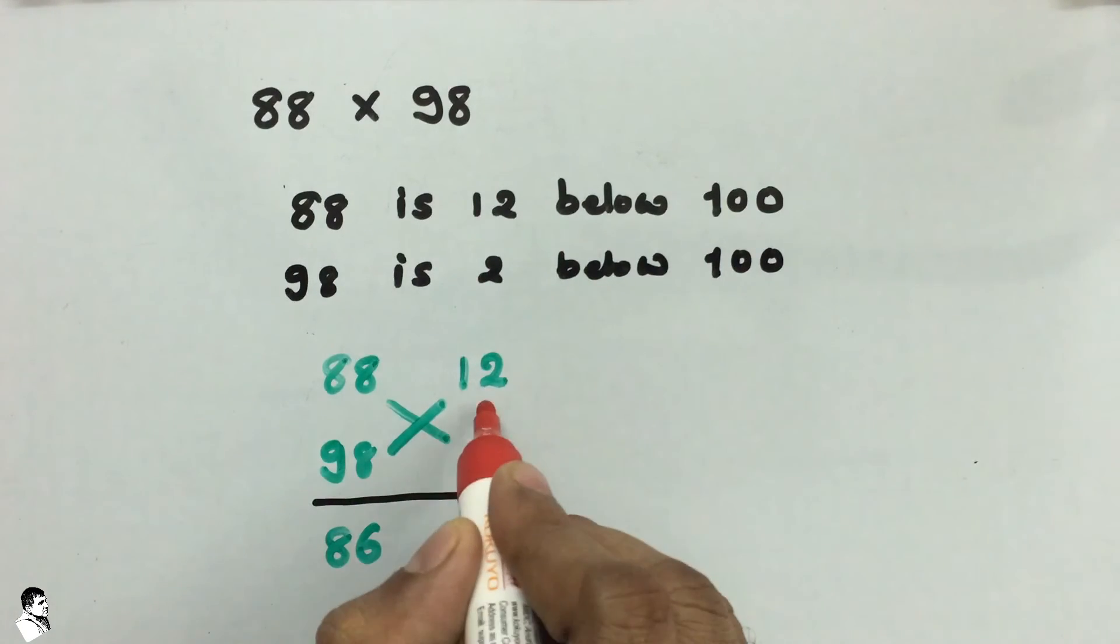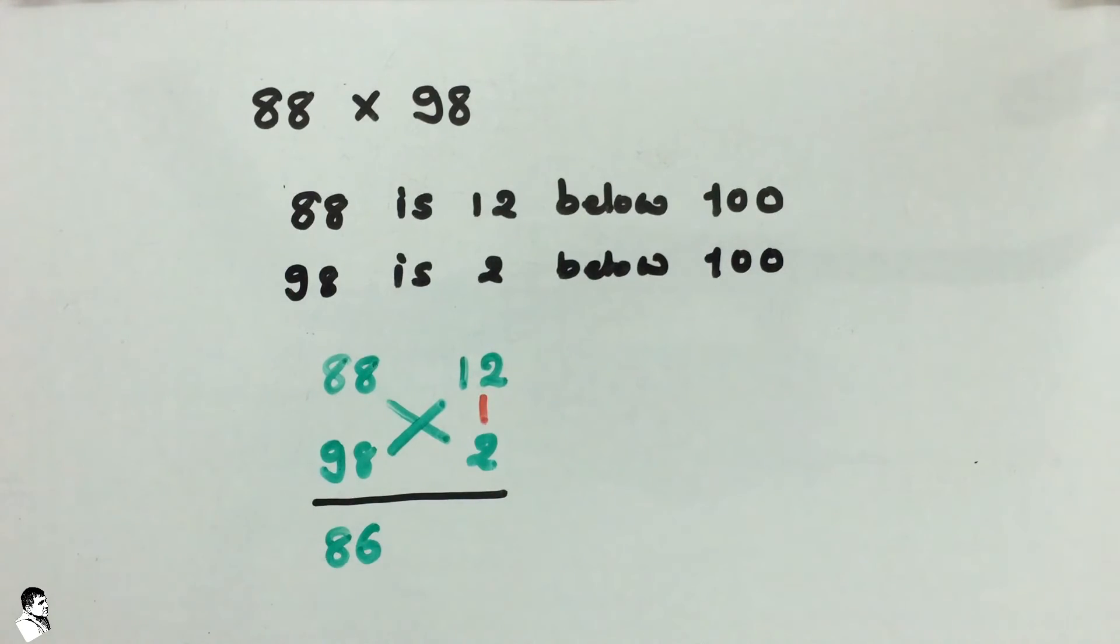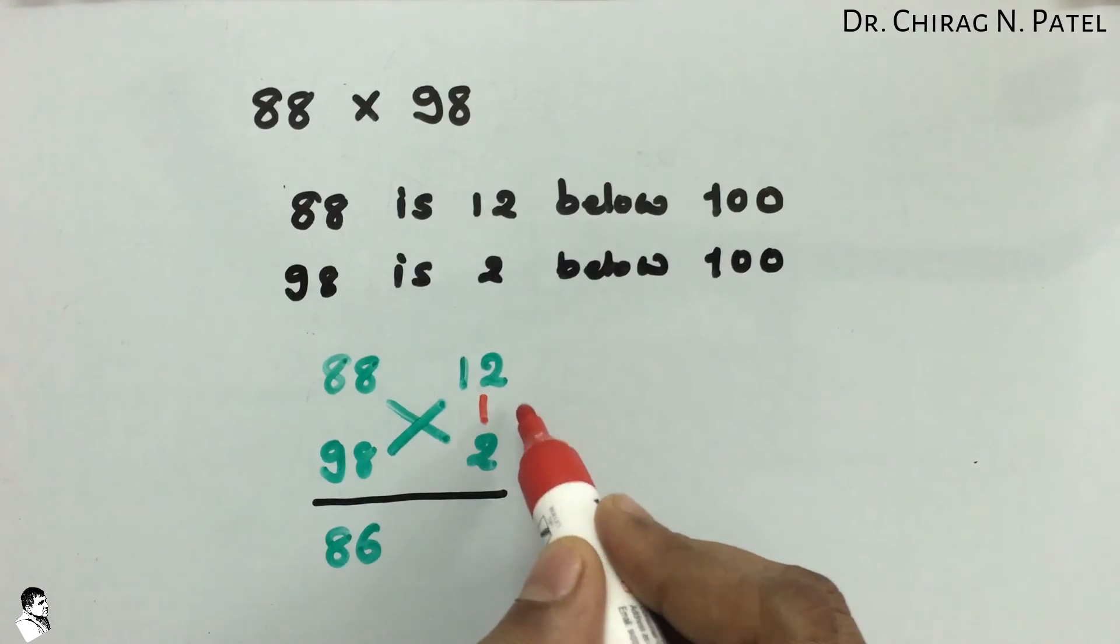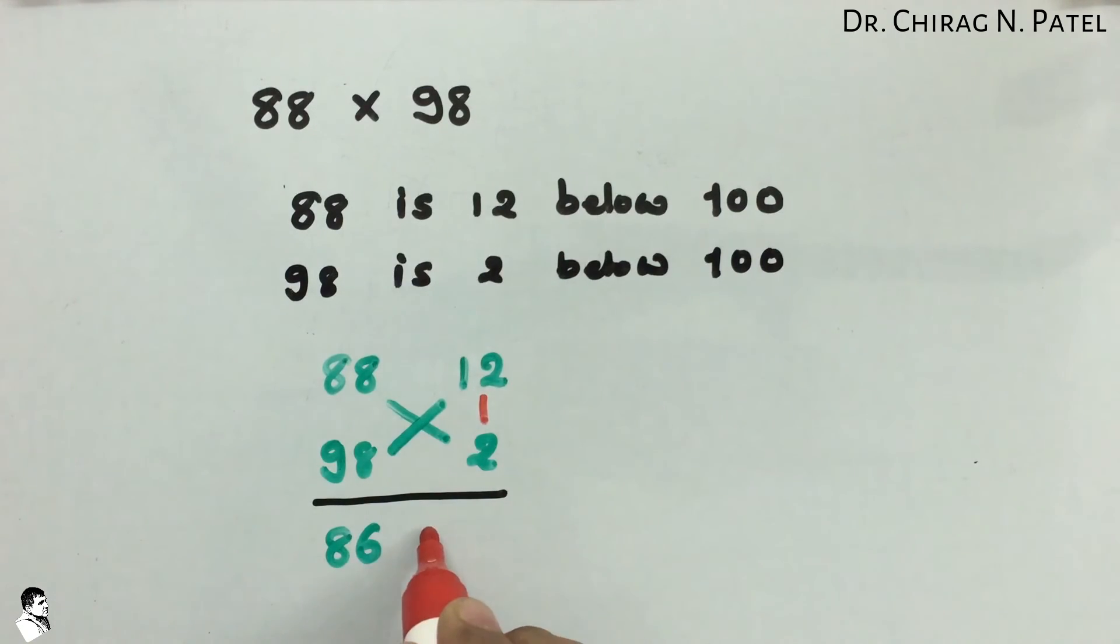If you do the vertical calculation for these two digits, 12 and 2, the vertical calculation requires you to multiply the two values: 12 into 2, so the answer will be 24.